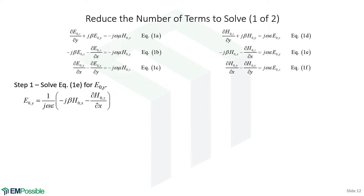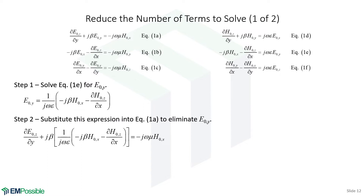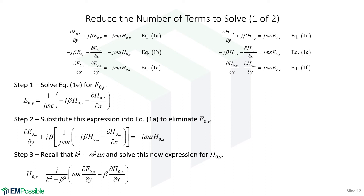Let's actually derive those equations. At the top we have our original six equations. We grab equation 1E and solve it for E-naught-Y, then substitute that expression into equation 1A. Now we have an equation with just E-naught-Z, H-naught-X, and H-naught-Z. Since H-naught-X appears twice, we expand, collect terms, and solve for H-naught-X — giving us H-naught-X just in terms of E-naught-Z and H-naught-Z. We've derived one of our four simplified equations.